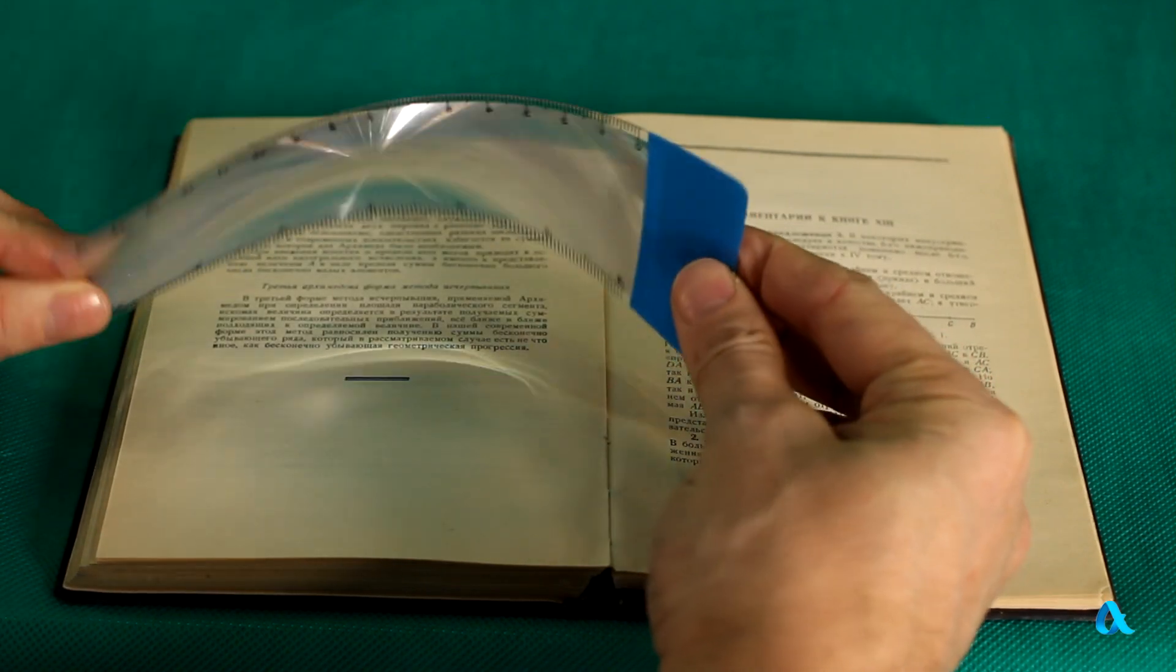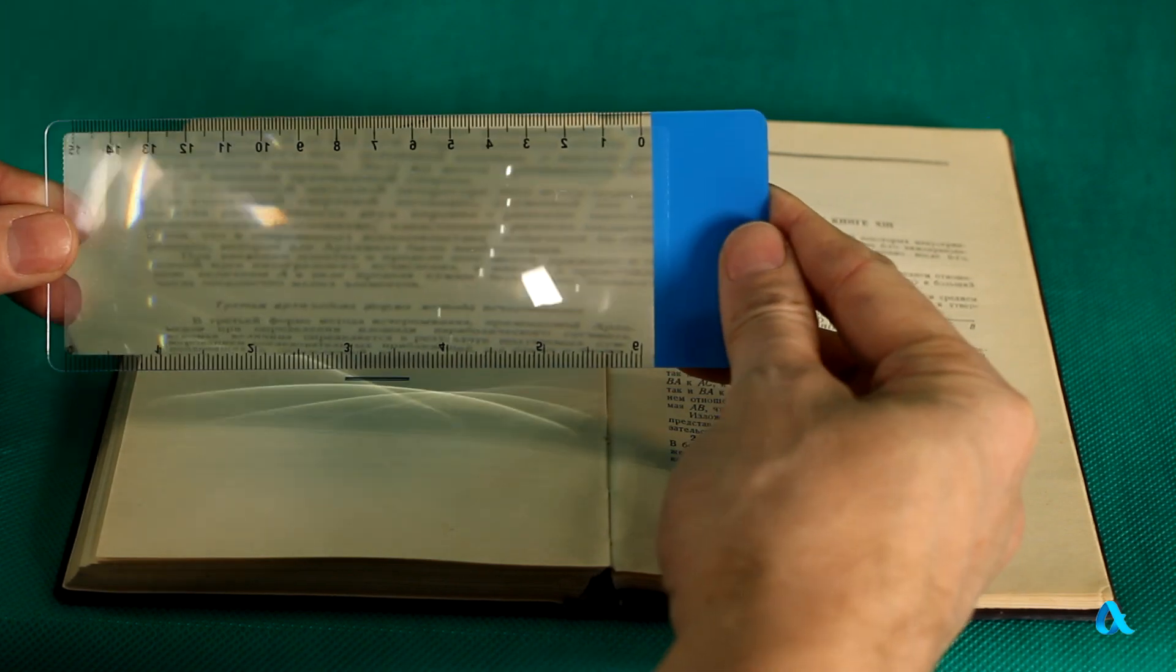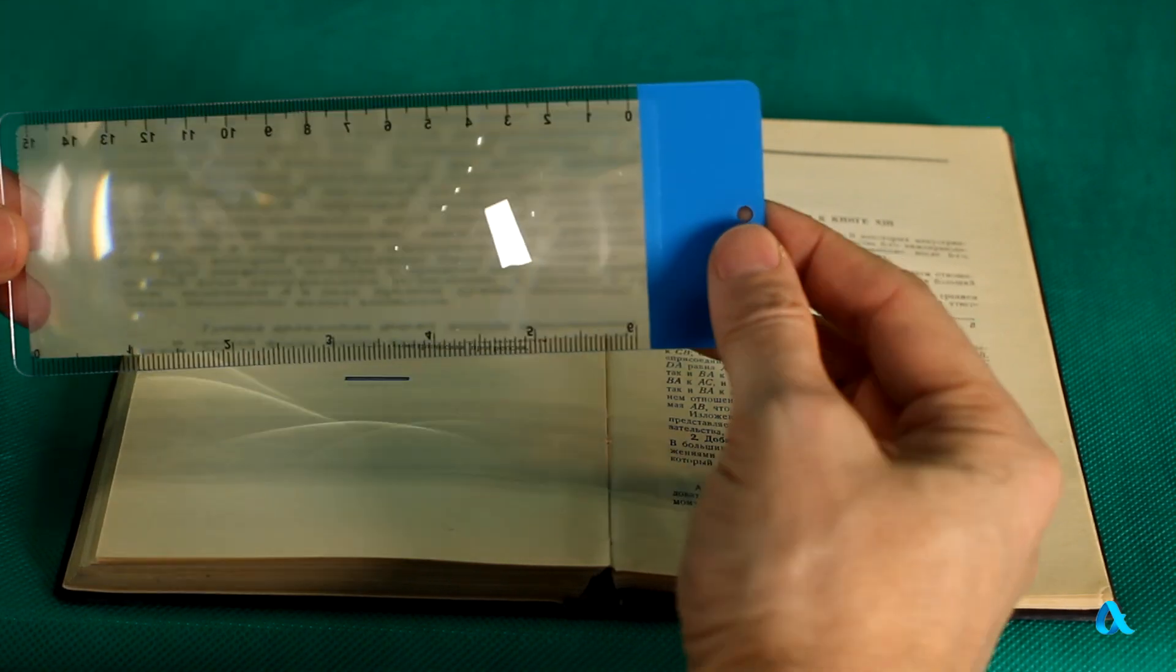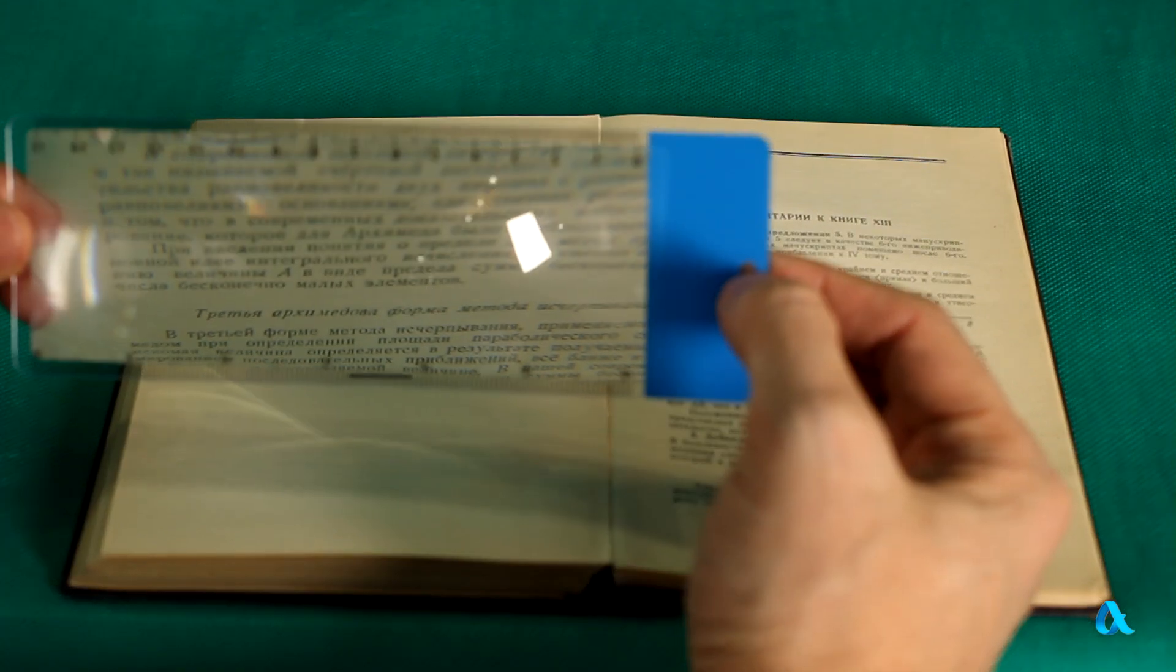When we move the lens away from the page, it magnifies letters just like an ordinary magnifying glass. But how does this lens work?